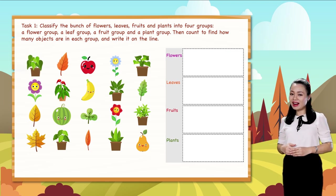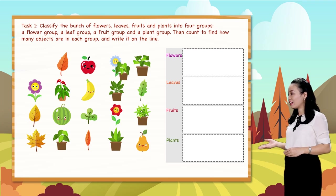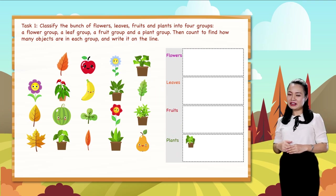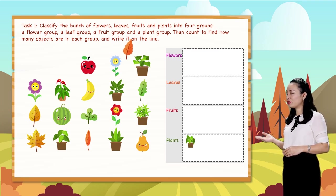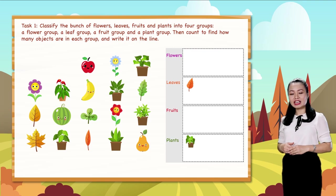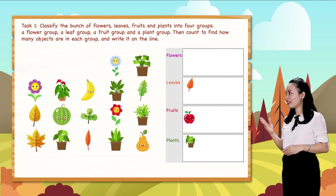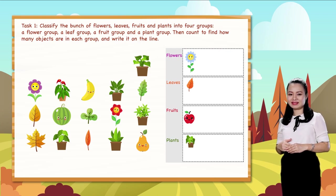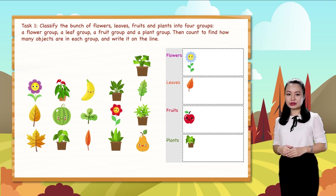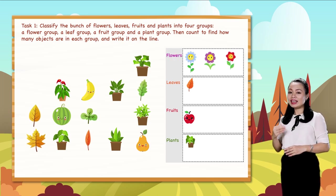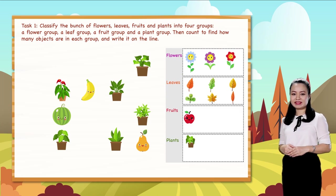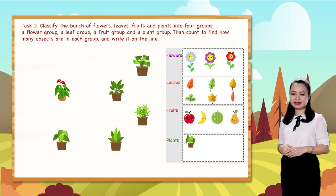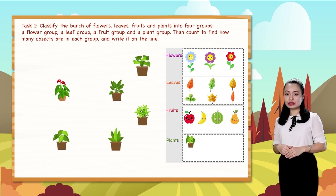This is a plant, pasted into the plant group. This is a leaf, pasted into the leaf group. This is a fruit, pasted into the fruit group. This is a flower, pasted into the flower group. Just paste flowers into the flower group, leaves into the leaf group, fruits into the fruit group, and plants into the plant group.